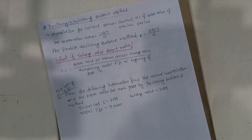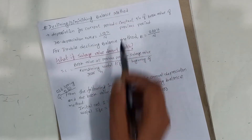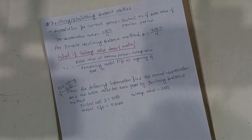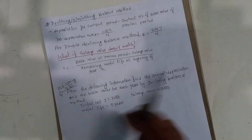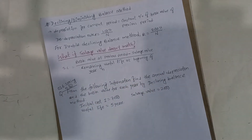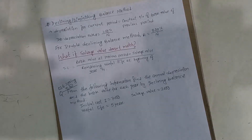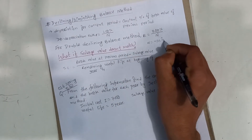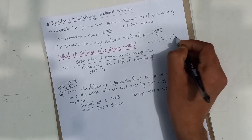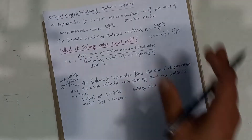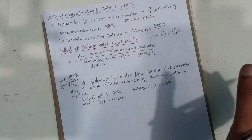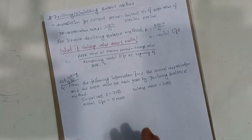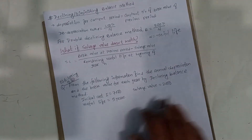The declining-diminishing balance method uses a rate of 100% divided by useful life (n). For the double-declining balance method, the rate equation is 200% divided by n, where n means useful life. This depreciation rate is calculated and applied to each previous period's book value to get the depreciation value.